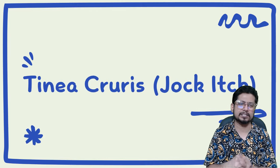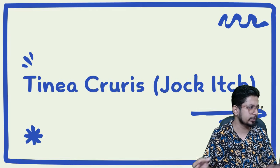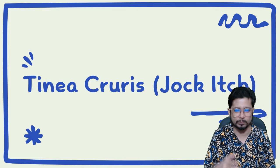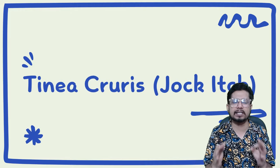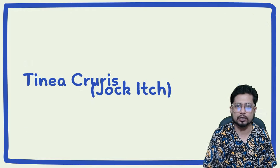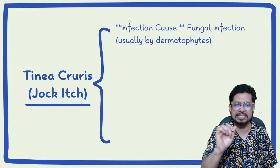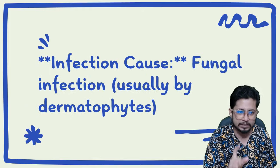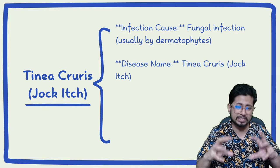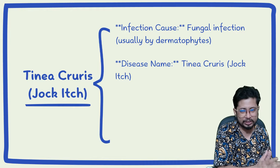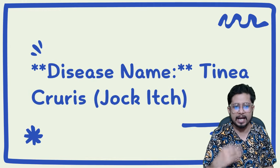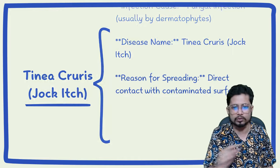Welcome back to Shomu's Biology. Today we are going to talk about tinea cruris infection, also known as jock itch, which causes itchiness in the groin area. Tinea cruris is an infection caused by fungi known as dermatophytes, which love to grow on human skin — particularly in parts of the body that are moisture-rich and warm, such as the private parts.